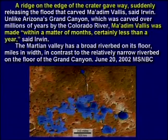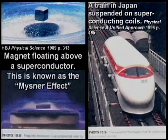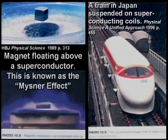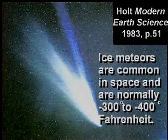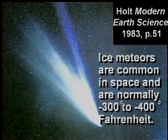The next thing to keep in mind is called the Meissner effect — where two magnets put together with the same pole will cause one to float on top of the other. That's how the Japanese trains go: magnetic levitation, no friction. The next thing to keep in mind is that there are comets flying around through space, and these comets are extremely cold — 300 to 400 below zero Fahrenheit.